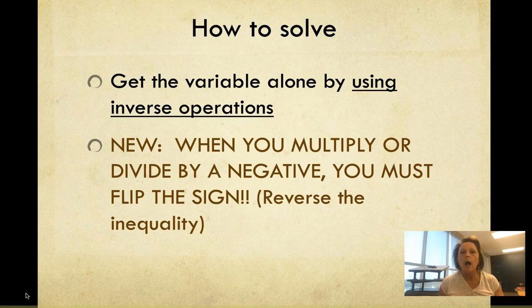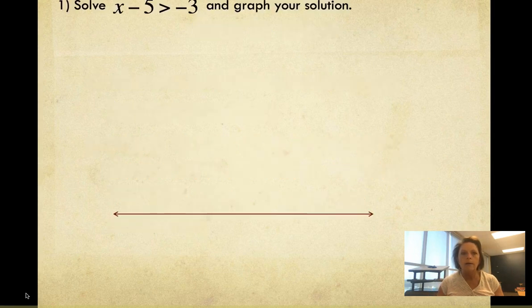But you have to do one thing new, and that is if at any time you multiply or divide by a negative number across the inequality sign, then you're going to have to flip your inequality sign. You're supposed to reverse it. Let's do some examples to help us figure this out.